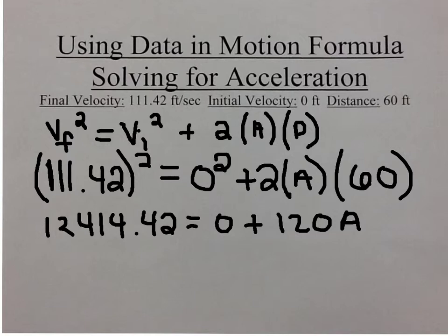When you square 111.42, you get 12,414.42. When you square the 0, it still equals 0. So now the equation reads 12,414.42 equals 0 plus 2 times 60 equaling 120A.